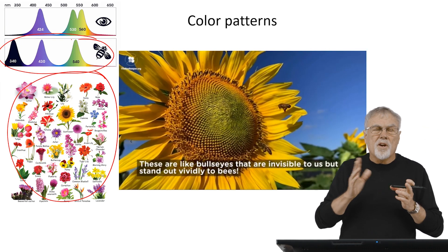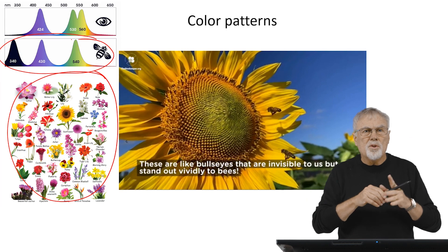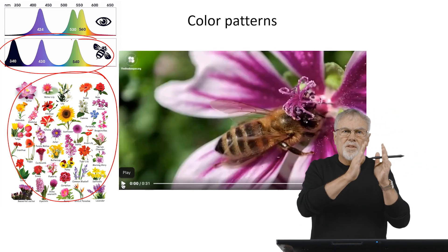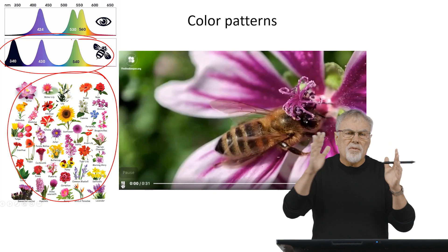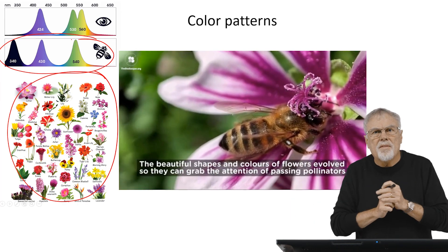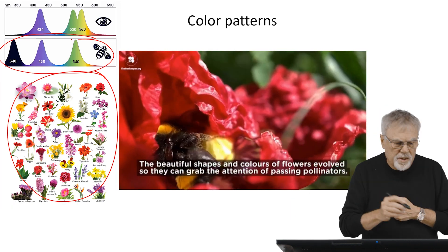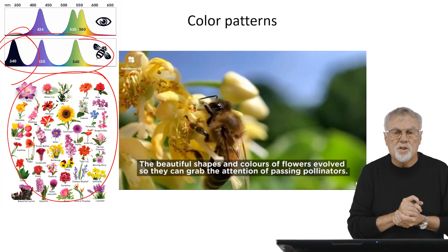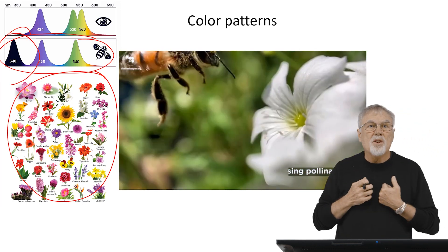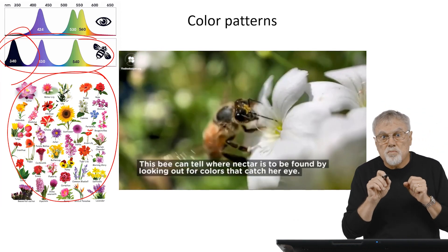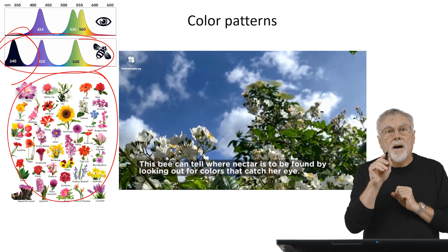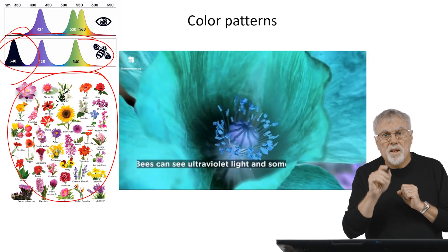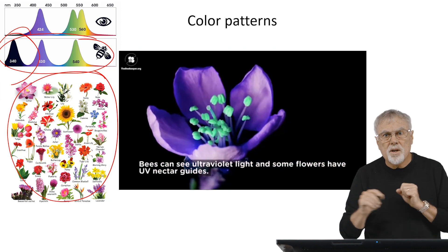Bees have three different kinds of receptors, tuned in different ways, and they show preferences along the scale of color that they can perceive. Especially interesting is the fact that they can see in the ultraviolet range, something that we can't do. And flowers have actually exploited the ultraviolet visual spectrum of bees in order to attract them.